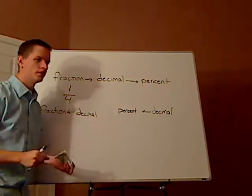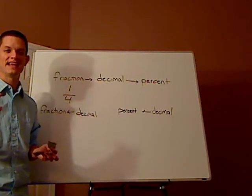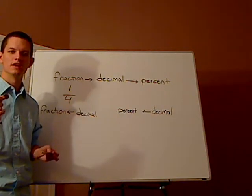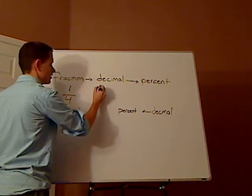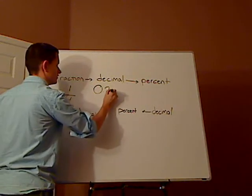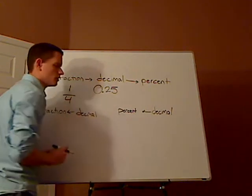Now, what is a quarter as a decimal? That's right, it's 25 cents. In dollars, that would be 0.25.